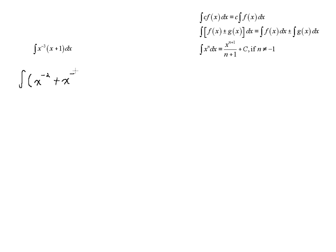Now we have a sum of functions, and we have powers of x, and those powers do not equal negative one. So therefore, we can use these two latter rules properties. We don't even have constants in this. So let's just do it.